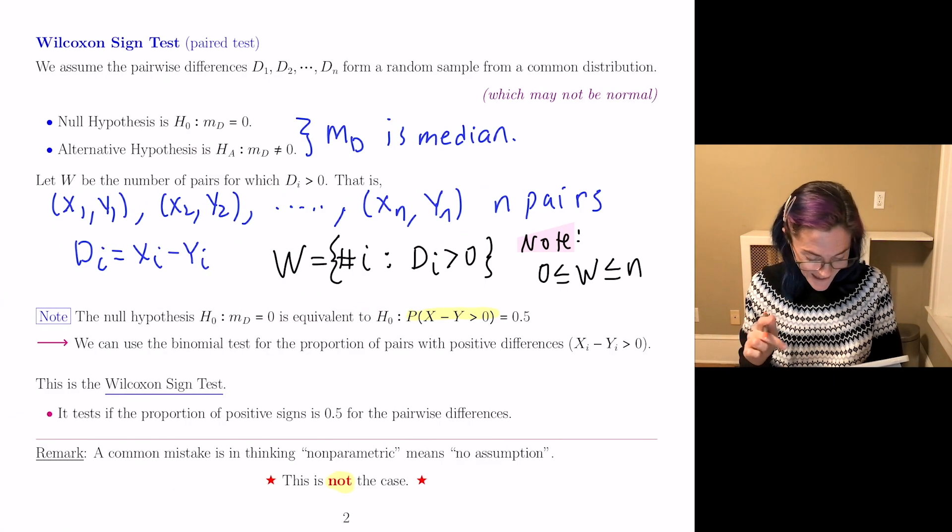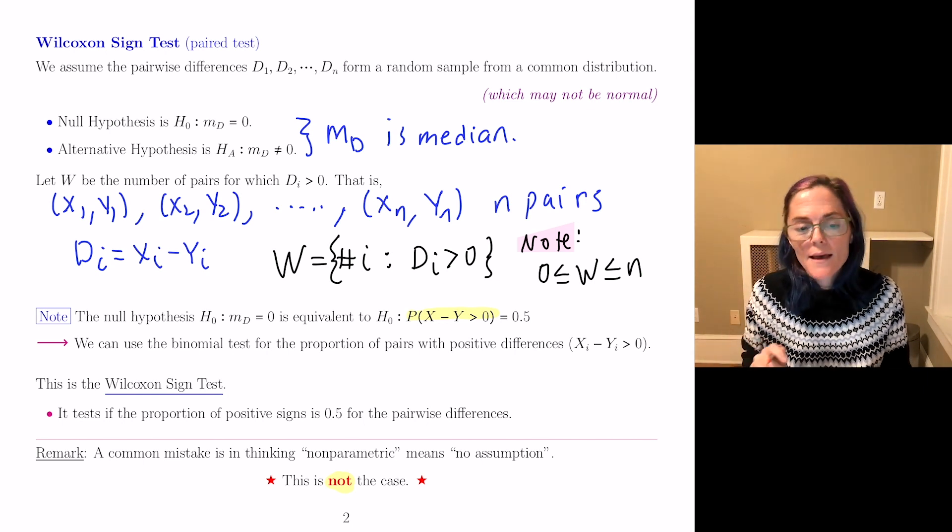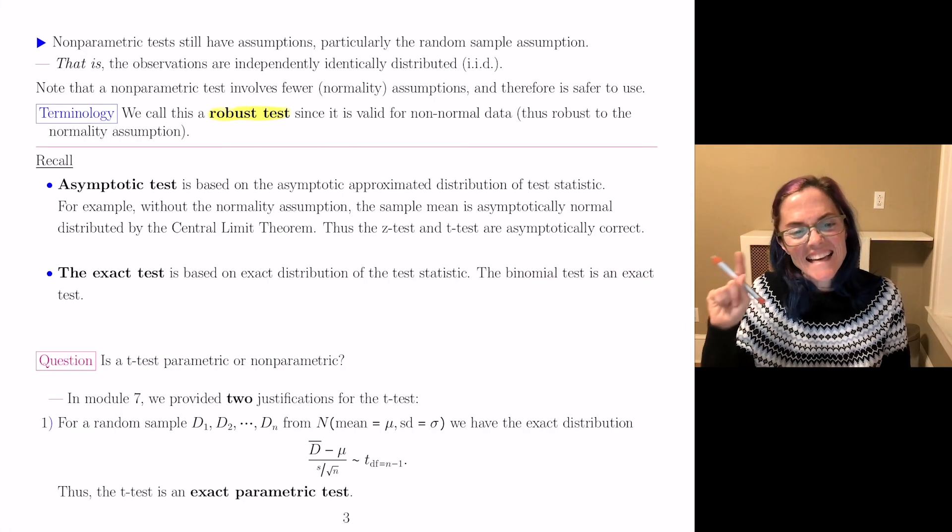So you see this Wilcoxon sign test, which really is a binomial test, is an exact test.